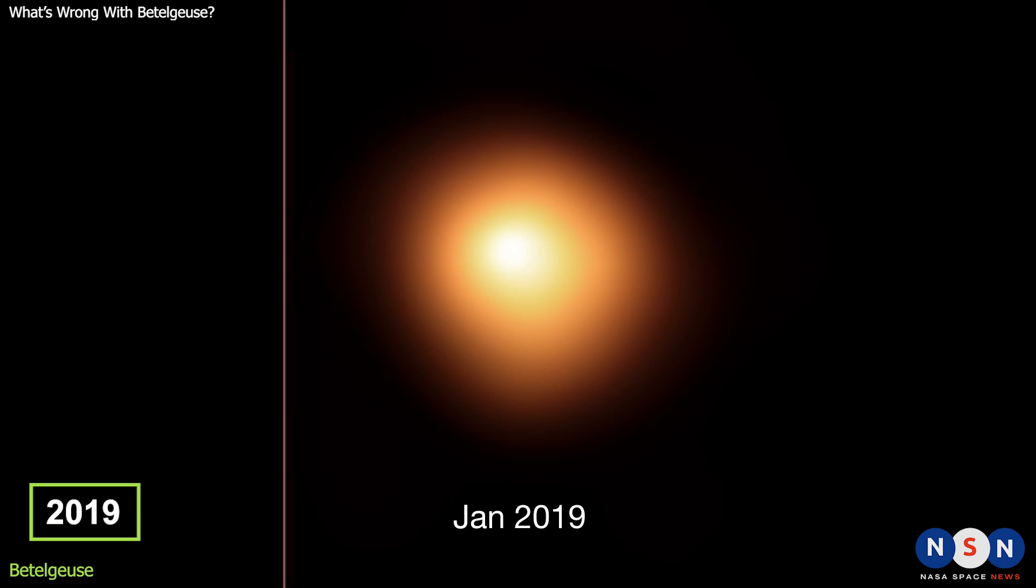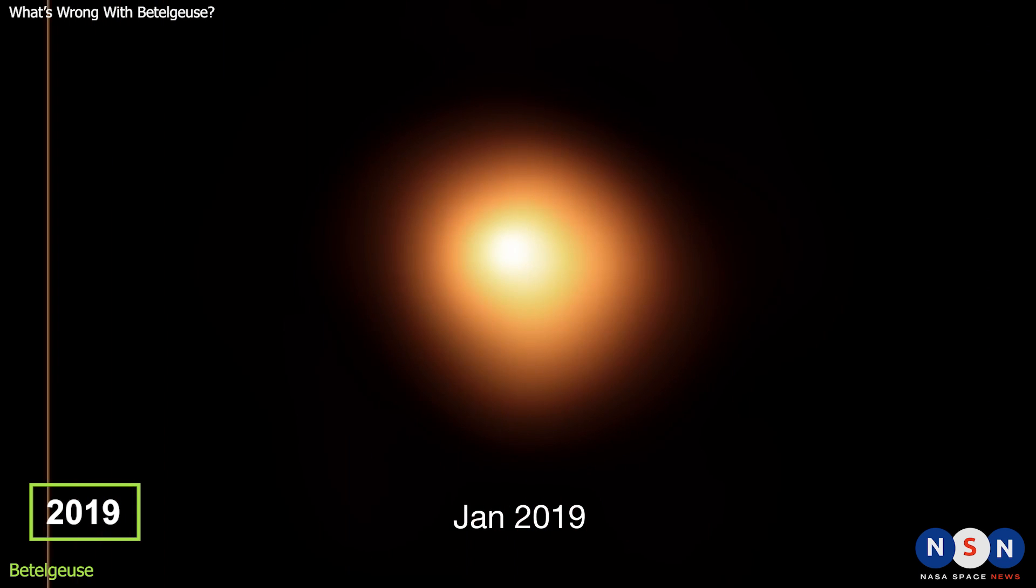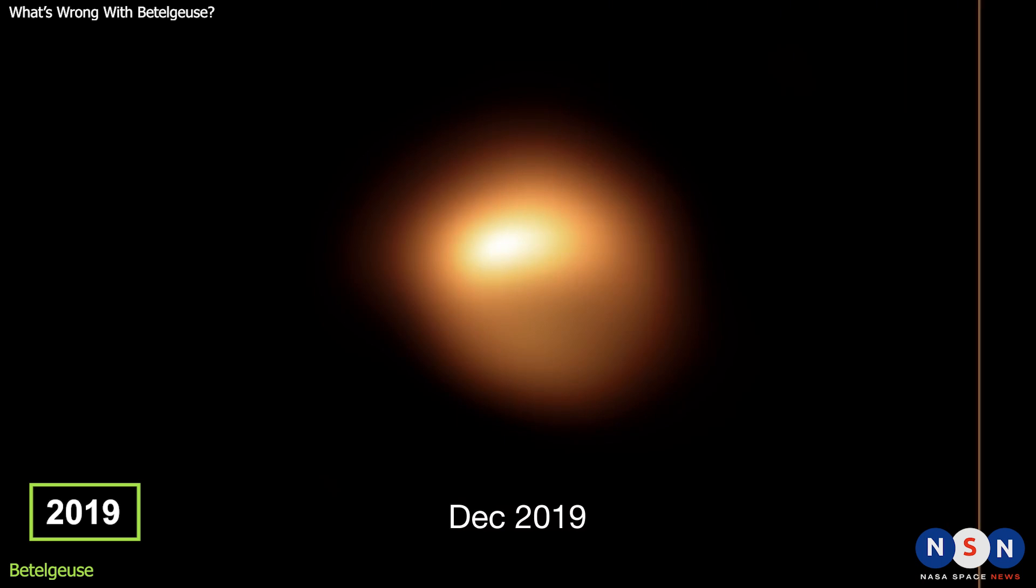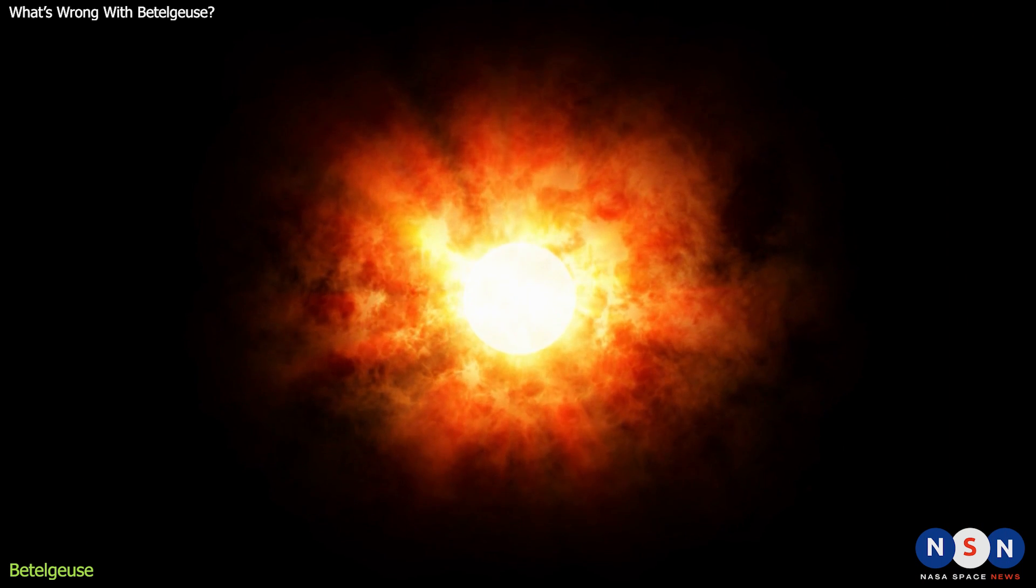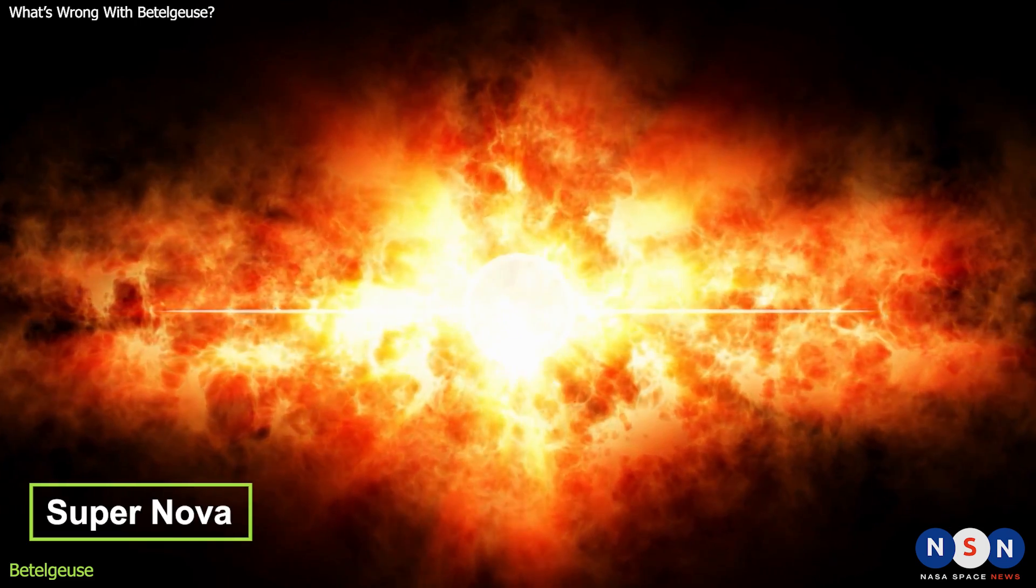But in 2019, something strange happened. Betelgeuse started to dim dramatically, losing almost 25% of its brightness in a matter of months. This event, known as the Great Dimming, puzzled astronomers and sparked rumors that Betelgeuse was about to explode in a spectacular supernova.